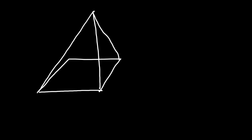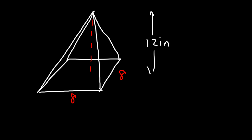In this video we're going to talk about how to calculate the volume of a pyramid. In this example we have a square base pyramid. The height of the pyramid is 12 inches. The formula you need is: volume equals 1/3 times the area of the base times the height of the pyramid.